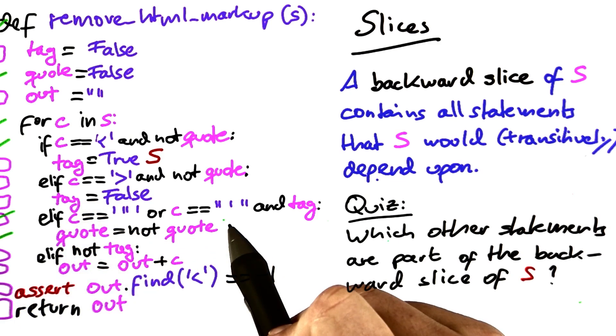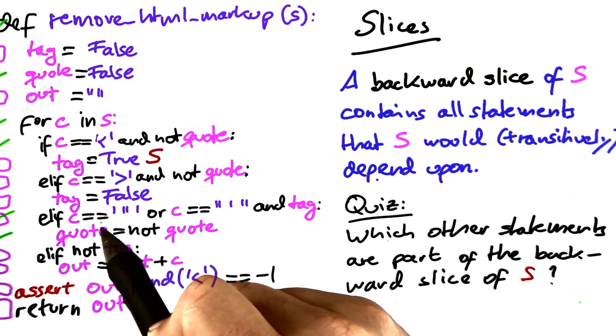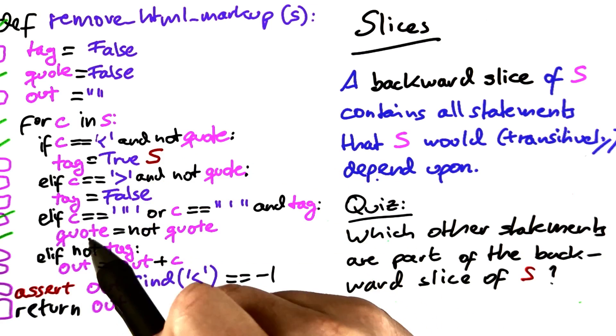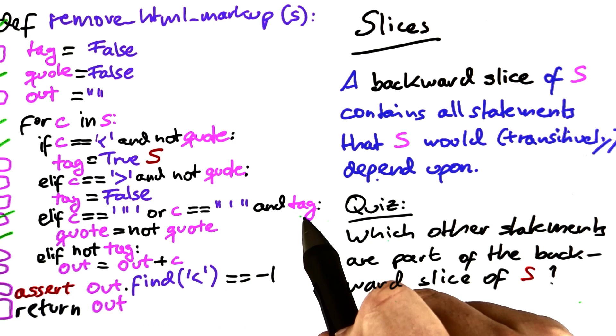This is control dependent on this earlier statement, which again reads from C that we've seen the dependencies of C before, but it also reads from tag.